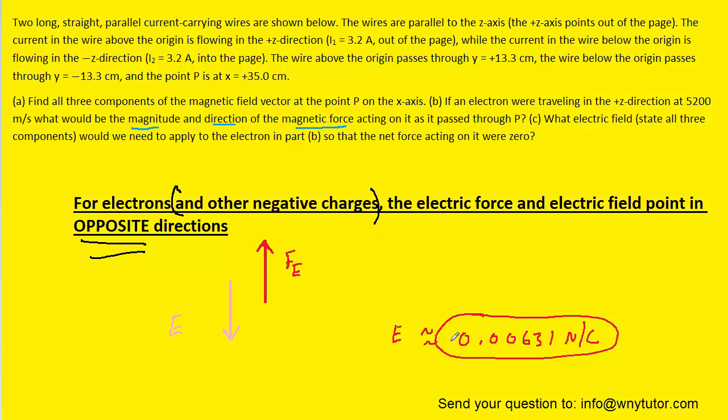So we can stick a negative sign on it and add the j hat notation. Alternatively, we can say that Ey is equal to negative 0.00631 newtons per coulomb, and then both Ex and Ez are equal to 0 newtons per coulomb. So this would be the final answer to part C of the question.